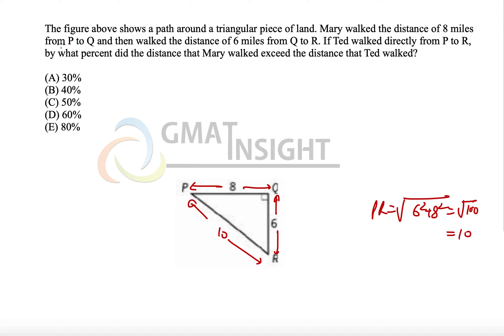Now, Mary walked the distance of 8 miles from P to Q and then walked the distance of 6 miles from Q to R. If Ted walked directly from P to R, by what percent did the distance that Mary walked exceed? So the distance of Mary will be equal to 8 plus 6, that is equal to 14, while the distance of Ted will be equal to directly from P to R, that is 10.